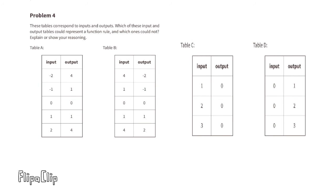Problem number 4. These tables correspond to inputs and outputs. Which of these input and output tables could represent a function rule, and which ones could not? Explain or show your reasoning.